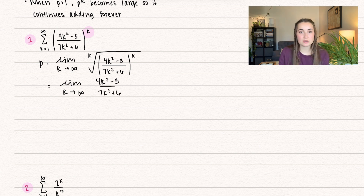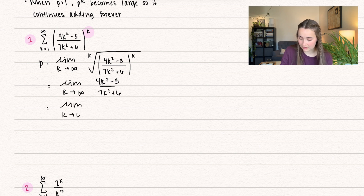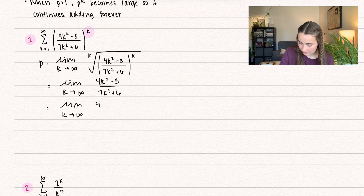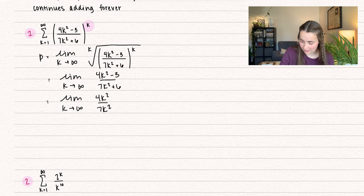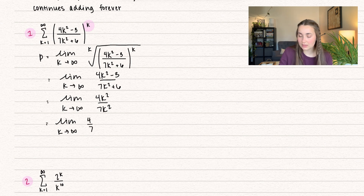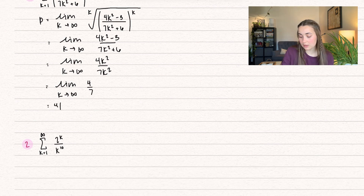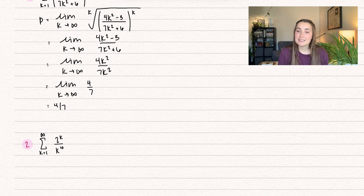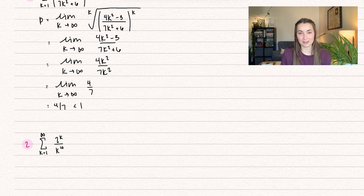You can use L'Hôpital's rule here, or use the trick that at a limit at infinity, the expression behaves the same as taking the highest power from the numerator and denominator — they behave exactly the same at infinity. The k squared cancels, so we get 4 over 7, and the limit of a constant is just that constant. If you applied L'Hôpital's rule, you'd get the same answer: 4 over 7. Since 4/7 is less than 1, by the root test this series is going to converge.